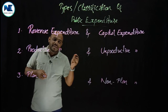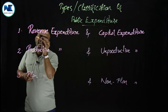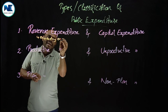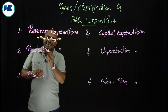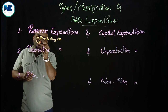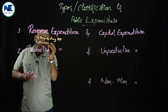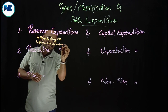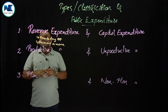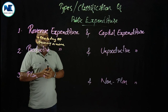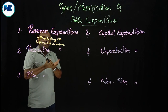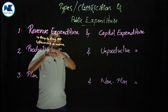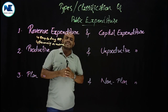First, revenue expenditure. Please understand it is the day-to-day expenditure of the government. It is recurring in nature — that means it repeats routinely. Examples include payment of salary, payment of interest, and maintenance of law and order. This type of expenditure is simply known as revenue expenditure.